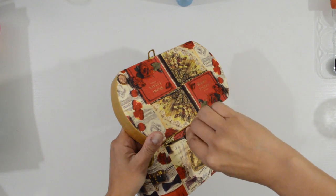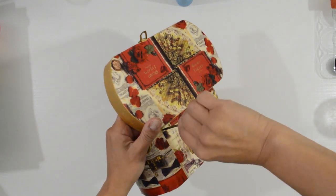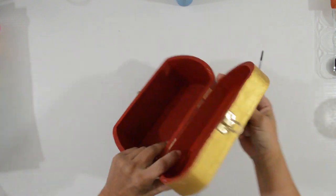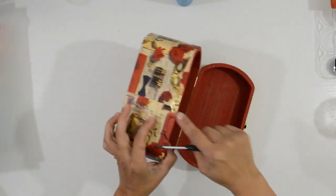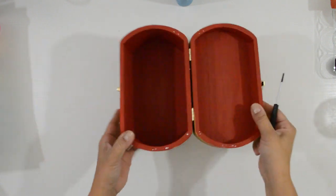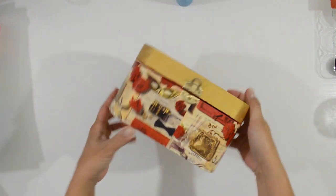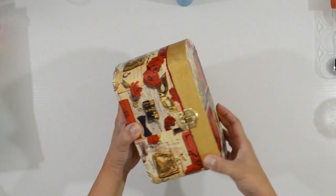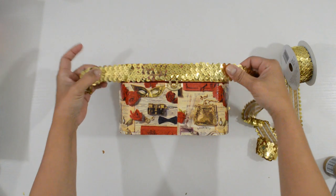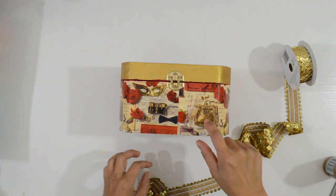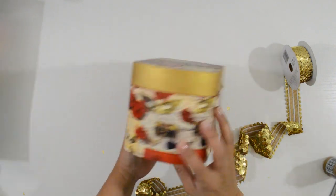Once that was dry, I screwed all the hardware back on. You can leave it as is if you want. I thought it would look cute if I added some gold sequins to match the gold sequins bags on the design.